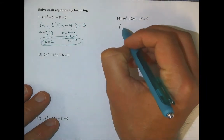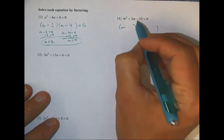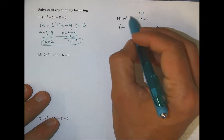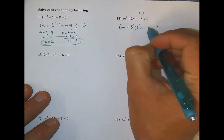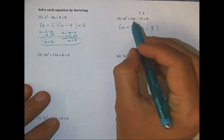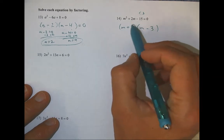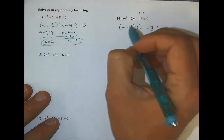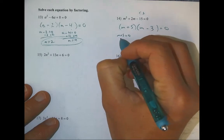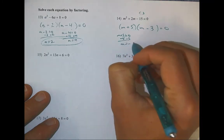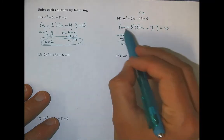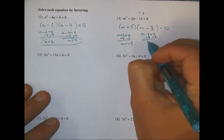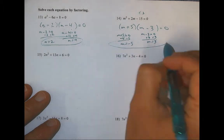Another easy one to factor — no leading coefficient. I've got negative 15, so that's probably a five and a three. Five and three can make a two, so feeling good about that. It's going to be a positive two, so I need the five to be positive and the three to be negative: positive five minus three. Double checking: m squared, negative three m, plus five m gives two m, and they multiply to negative 15. Setting each factor equal to zero: m plus five equals zero gives m = negative five, and m minus three equals zero gives m = 3.